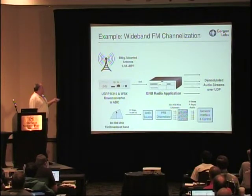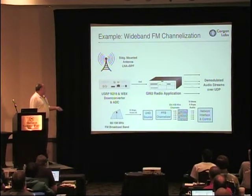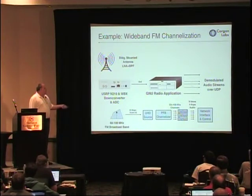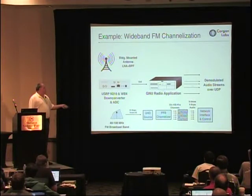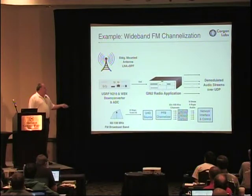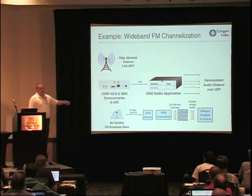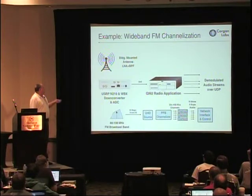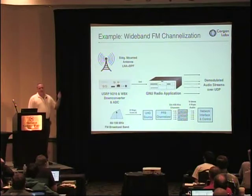This application used a USRP N210 and a WBX daughterboard to down-convert the entire FM radio band in a GNU Radio application using software that already exists in GNU Radio, demodulate all 50 potential radio channels, and pass the audio off as UDP streams to another signal processor. The idea is that they can install an antenna, a USRP, and a rack-mount server somewhere and get the audio from all the radio stations in that geography.